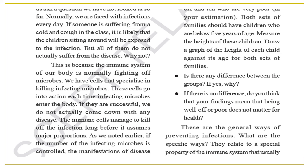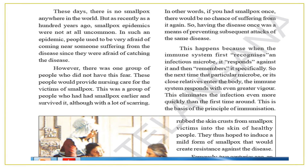These are the general ways of preventing infections. For specific prevention, consider that these days there is no smallpox anywhere in the world. But around 100 years ago, smallpox epidemics were not uncommon. People were very afraid of coming near someone suffering from the disease. However, there was one group of people who did not have this fear — those who provided nursing care for smallpox victims. This was a group of people who had smallpox earlier and survived it. If you had smallpox once, there would be no chance of suffering from it again. Having the disease once was a means of preventing subsequent attacks of the same disease.